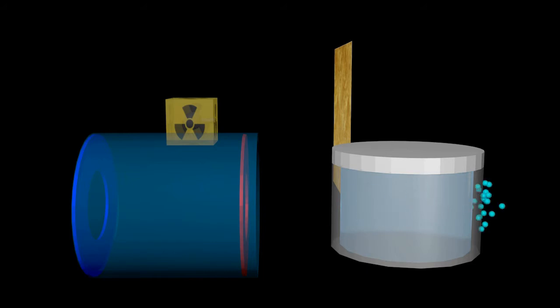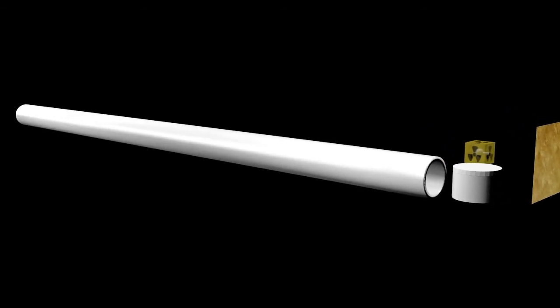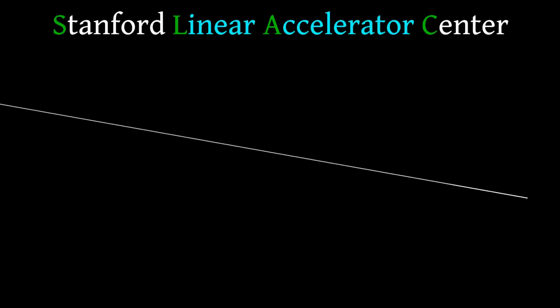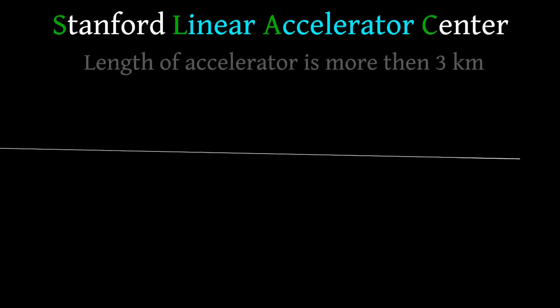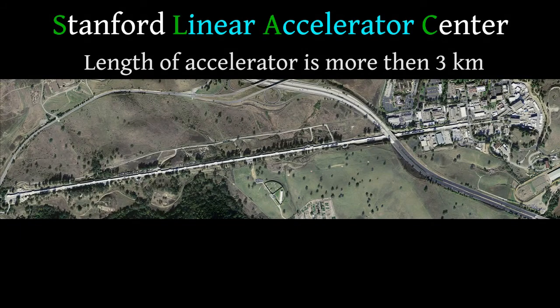If we switch on the battery, then the electrons will be accelerated along the electrical field. To accelerate the electrons up to the speed of light, we should take a lot of such tubes with electrodes. So we obtain the linear particle accelerator, which is almost 3 km long.